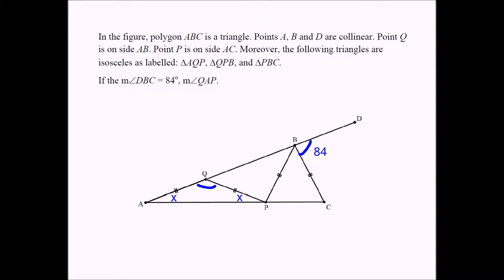And this angle has to be 180 minus 2X. Why? Because the sum of the three interior angles of any triangle should equal 180. So from 180, if you subtract these two angles of size X each, you're going to be left with 180 minus 2X.